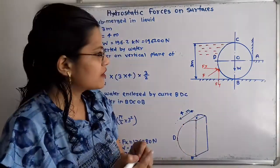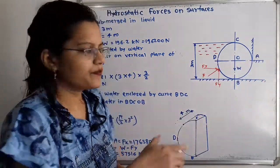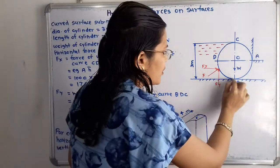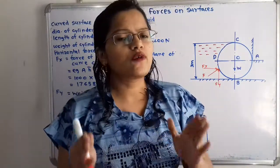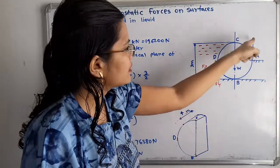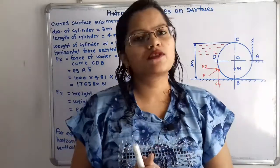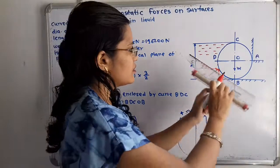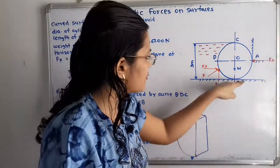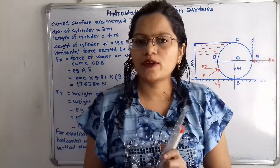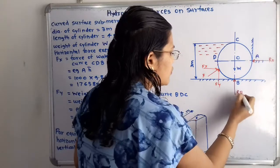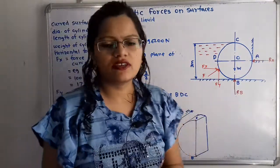The question asks us to find the reaction at point A and at point B. This cylinder is in contact with point A, which is a vertical fixed surface. Point B is the support to the cylinder. Reaction is always perpendicular to the surface. The reaction force at point A is RA, acting horizontally towards the cylinder. At point B, the fixed surface is horizontal, so the reaction RB is in the vertical direction, also acting towards the cylinder.